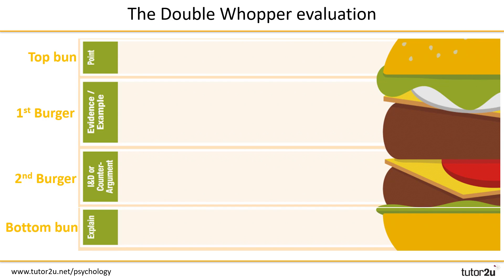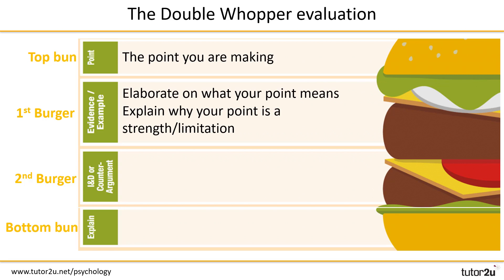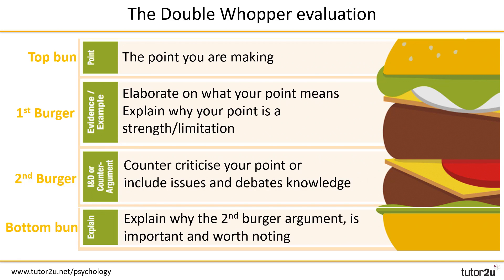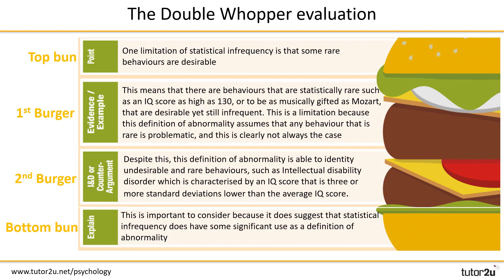So where does this fit in with our burger template? We also have a double whopper burger template that helps you maintain structure when writing these level four style evaluations. You can see on the screen that we still include the points, the elaboration, and the reason why something is a strength or limitation. On the double whopper evaluation template, we also add our counter-criticism, and finally we offer a reason why our counter-criticism was important and worth noting. When you piece all of this information together, you should have something that looks like this — pause here if you want to read through it again.